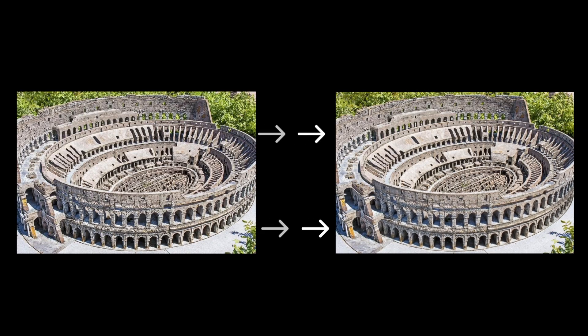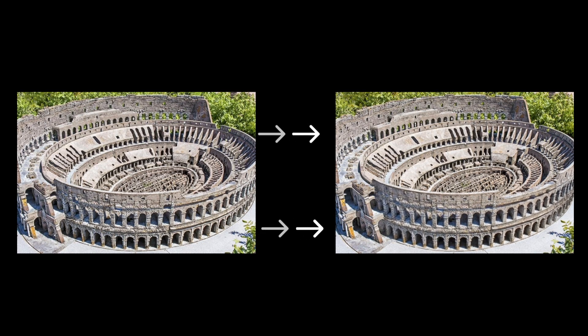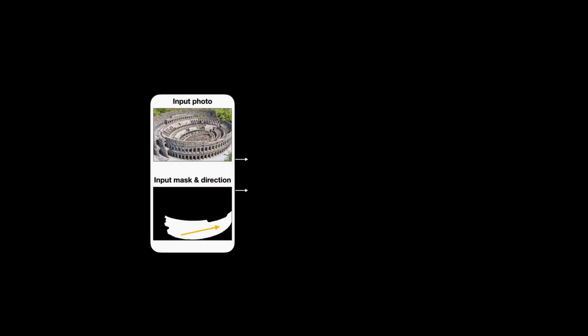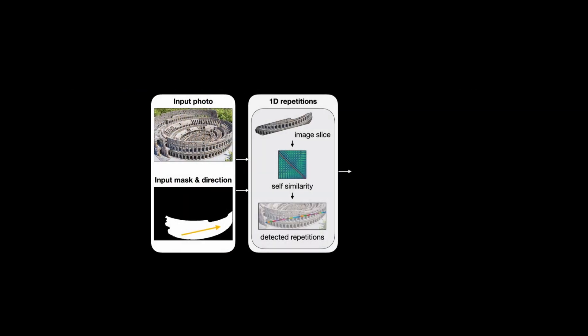How is it being done? We assign each pixel a target location using a fast two-stage algorithm. First, we sample a 1D slice of pixels along the desired direction and find the repetitions along this slice using dynamic programming. Those repetitions give us a hint to what the motion should look like over the entire masked area.